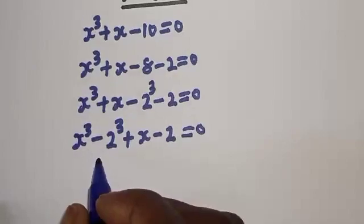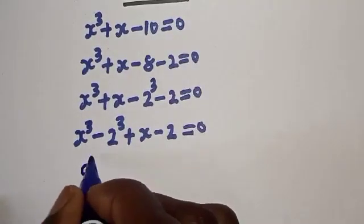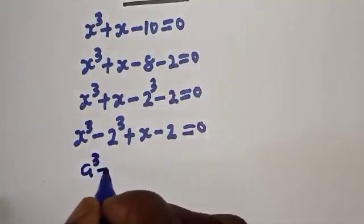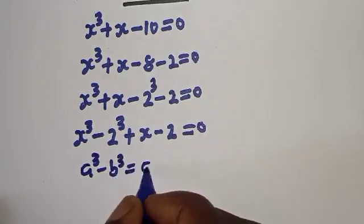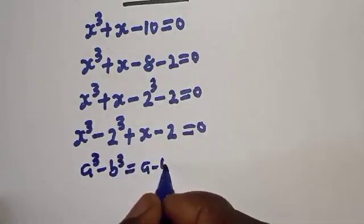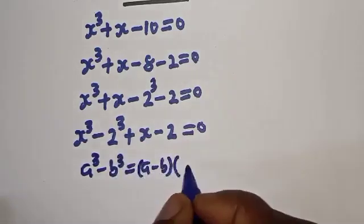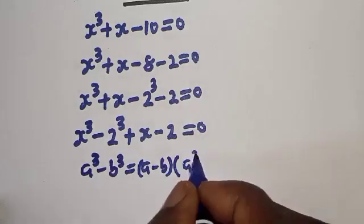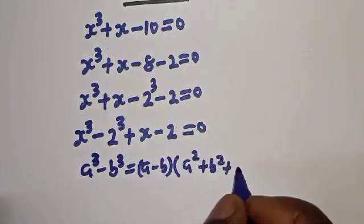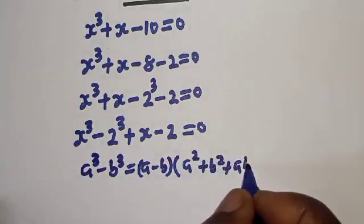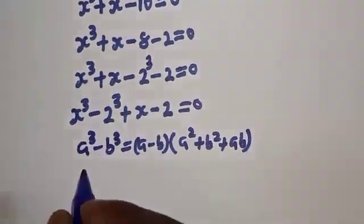Take note of this exponential rule: if you have a raised to power 3 minus b raised to power 3, this is equal to a minus b, bracket, a squared plus b squared plus ab.